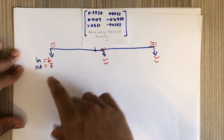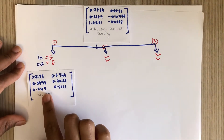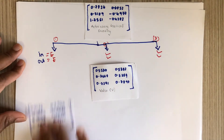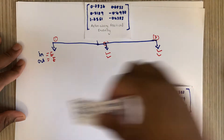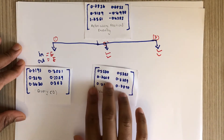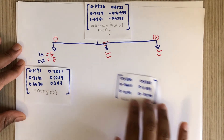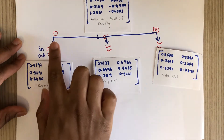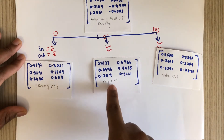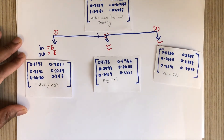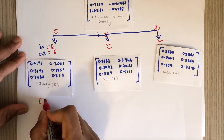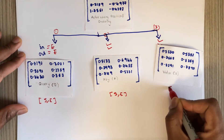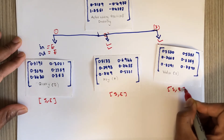The output of the first neural network is called Q (Query), the second is K (Key), and the third is V (Value). Each has dimension S by E — that is, 3 by 2.